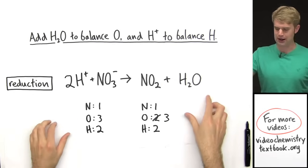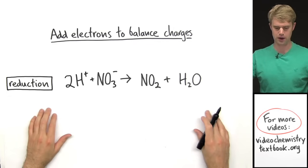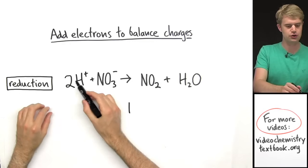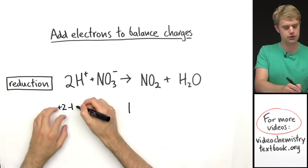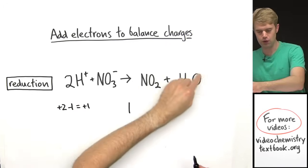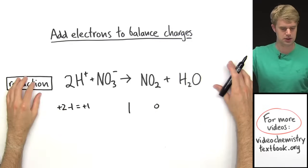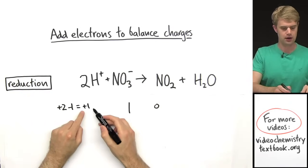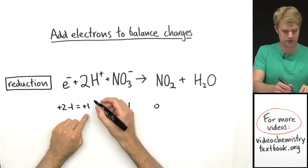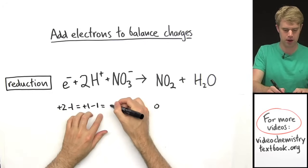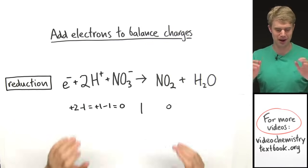The atoms — nitrogen, oxygen, and hydrogen — all balance. Now the last thing for the reduction half-reaction is to balance the charges by adding electrons. On the left side we have 2H⁺ giving plus 2, and 1 NO₃⁻ giving minus 1, so the total charge is plus 1. The right side has no charged species, so its charge is zero. I add 1 electron to the left side: plus 1 minus 1 equals zero. Now both sides have zero charge — charges are balanced.